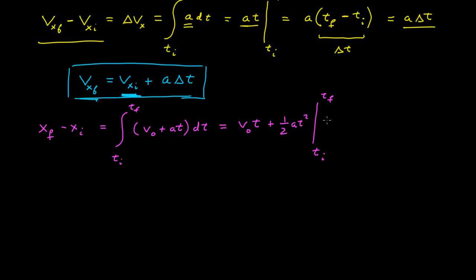And if I plug in tf into there, it gives me v naught tf plus one-half a tf squared, then minus the values when I plug in t sub i. So that's v naught t i minus one-half a t i squared.